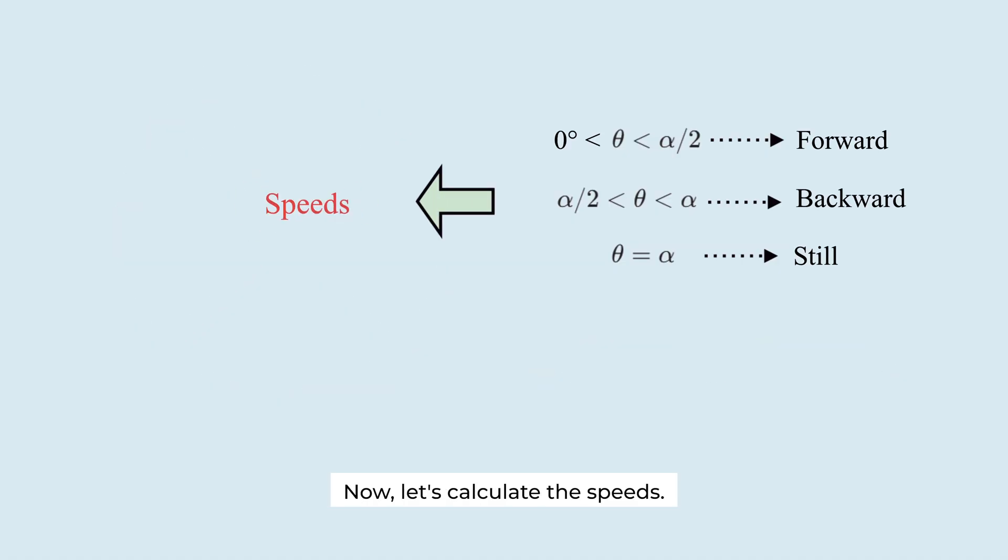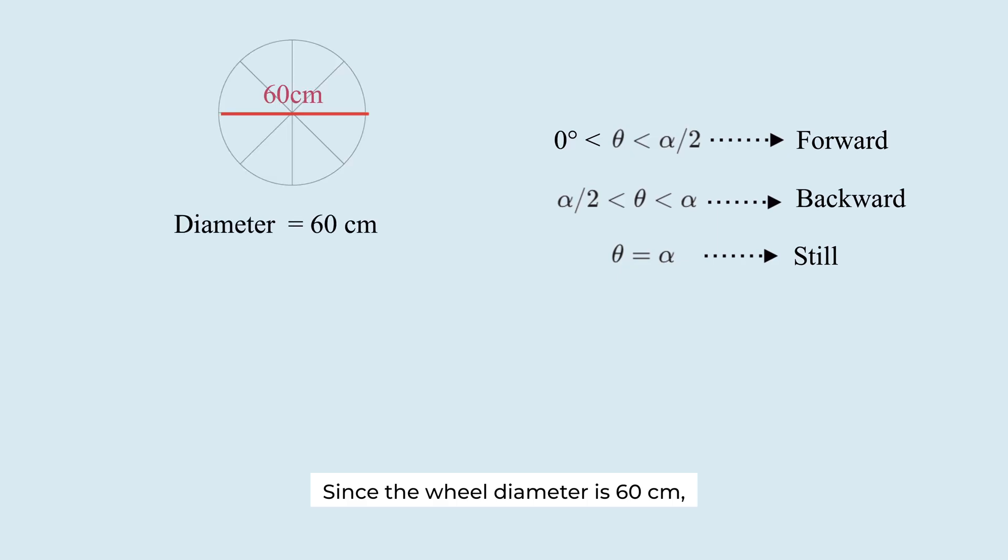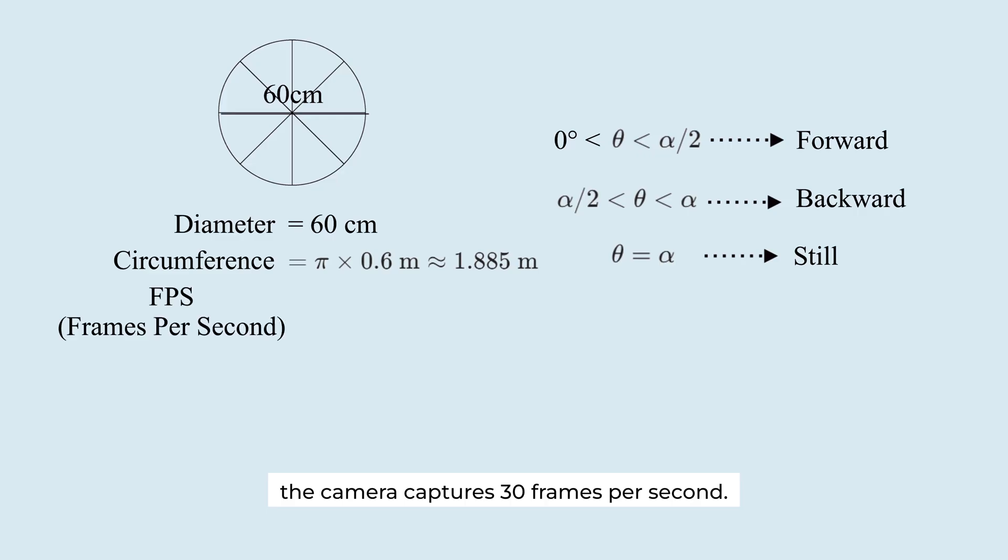Now, let's calculate the speeds. Since the wheel diameter is 60 cm, the circumference is 1.885 meters. Assume the camera captures 30 frames per second. To appear still, the wheel must rotate by alpha per frame. Theta equals 45 degrees. This means the wheel rotates 1 eighth of a full turn per frame.